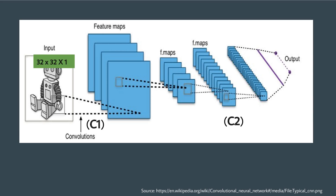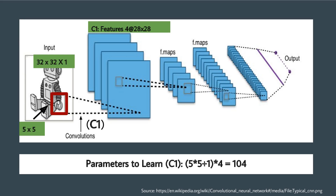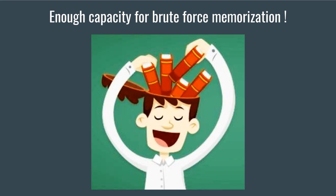Consider this 32 by 32 grayscale input image. When a 5 by 5 filter is applied, we get a feature map of 28 by 28. If four filters are applied, we will have four feature maps. The total number of learning parameters for the convolution layer is 104. This gives them enough capacity for brute force memorization, which is large enough to shadow the training data.